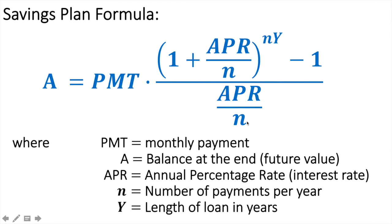Just because we deal with monthly payments. Y is the number of years that you're going to be investing. Typically when we're talking about the stock market, we don't want to invest in anything shorter than about three, four, or five years minimum. If it's anything less than that, we'll just keep it in a savings account or something, just because of the volatility of the stock market.